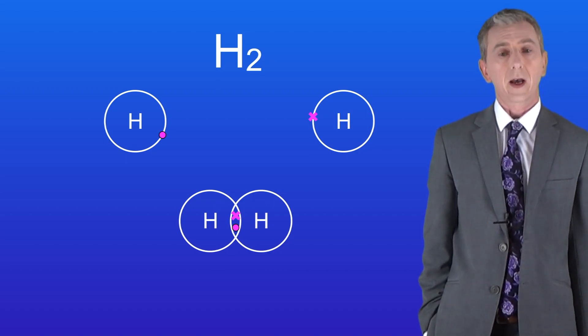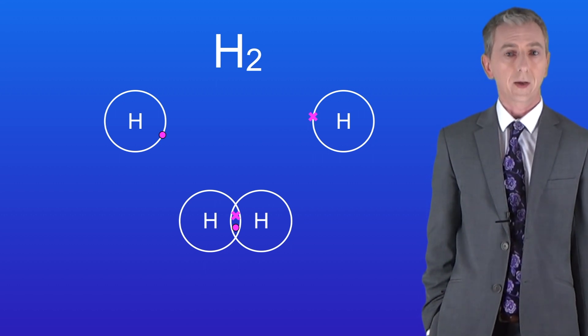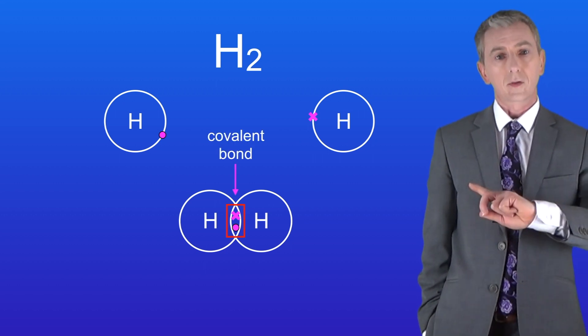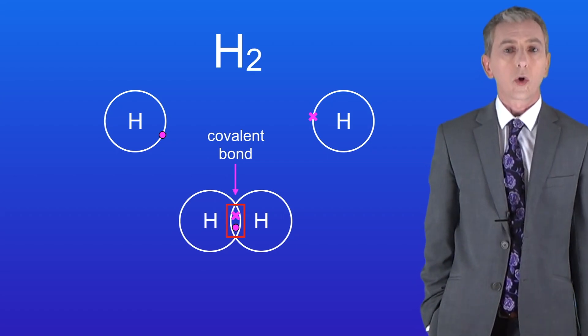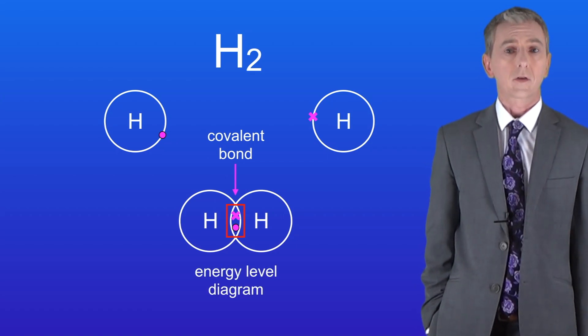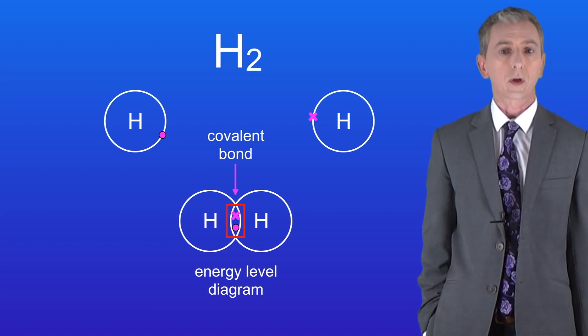By sharing a pair of electrons the atoms have formed a single covalent bond and here it is. Scientists call this diagram an energy level diagram and you could be asked to complete one of these in your exam.